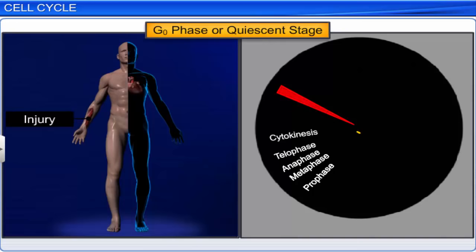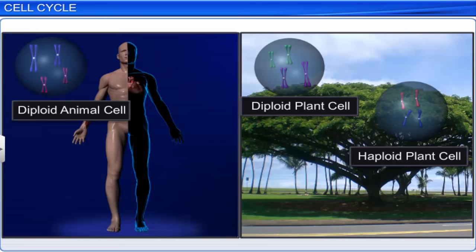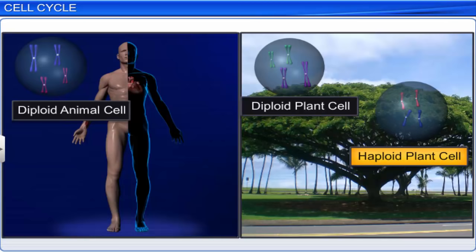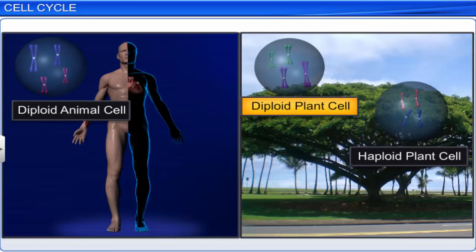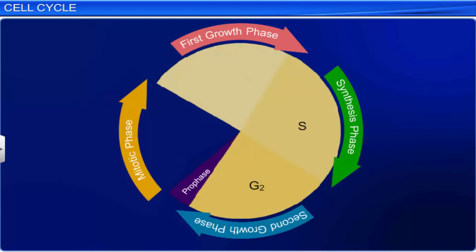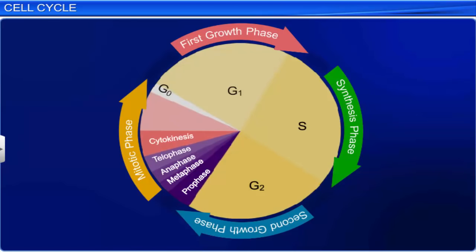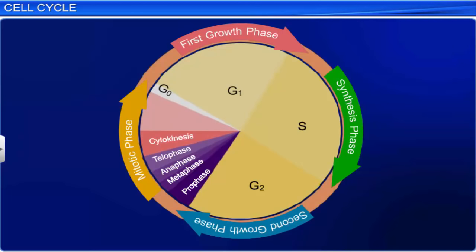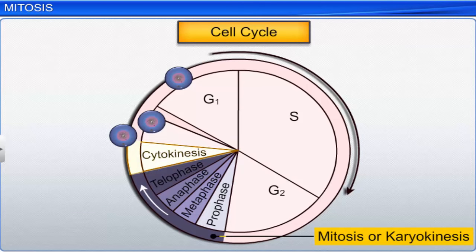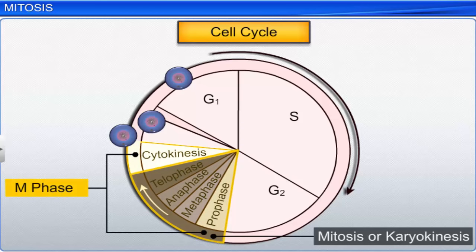In animal cells, mitotic cell division occurs only in diploid somatic cells, whereas in plants, it is seen in both haploid and diploid cells. In living organisms, the cell cycle is a series of events that leads to cell duplication and division, resulting in the growth of organisms. Mitosis or karyokinesis, along with cytokinesis, defines the M phase or the mitosis phase of the cell cycle.